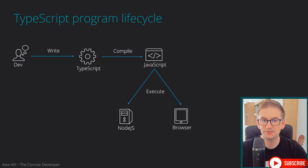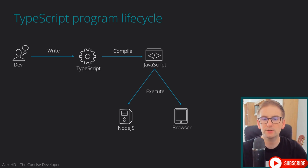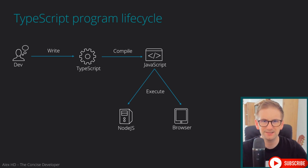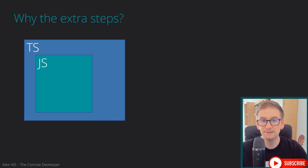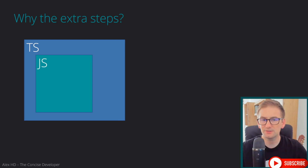We write TypeScript code as developers, and then the TypeScript compiler will take that TypeScript code and generate, compile, or transpile it into JavaScript code. This is basically the lifecycle of a TypeScript program. Let's think about why we need these extra steps. Why isn't JavaScript already enough? Isn't programming already complicated?